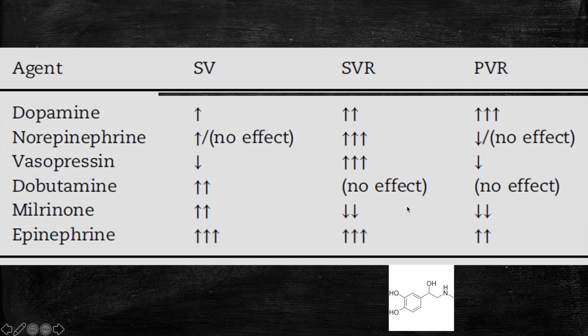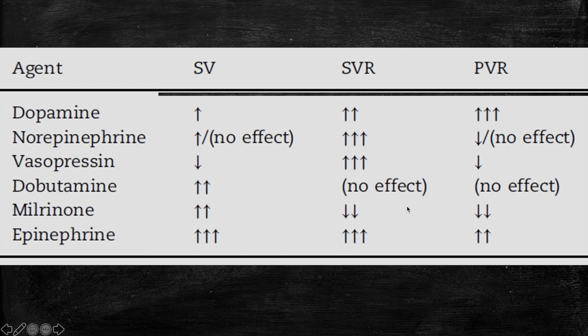And then the last agent is epinephrine. Epinephrine also increases the contractility. It will increase the stroke volume and hence the cardiac output. It also increases the SVR, the systemic vascular resistance. But the problem with epinephrine is that it increases the pulmonary vascular resistance. For example, in cases of pulmonary hypertension, PPHN, it will worsen the PVR, which is probably not a good thing. Despite that, it increases the stroke volume and the SVR, but increasing the PVR in cases of neonatal PPHN is not a good thing.